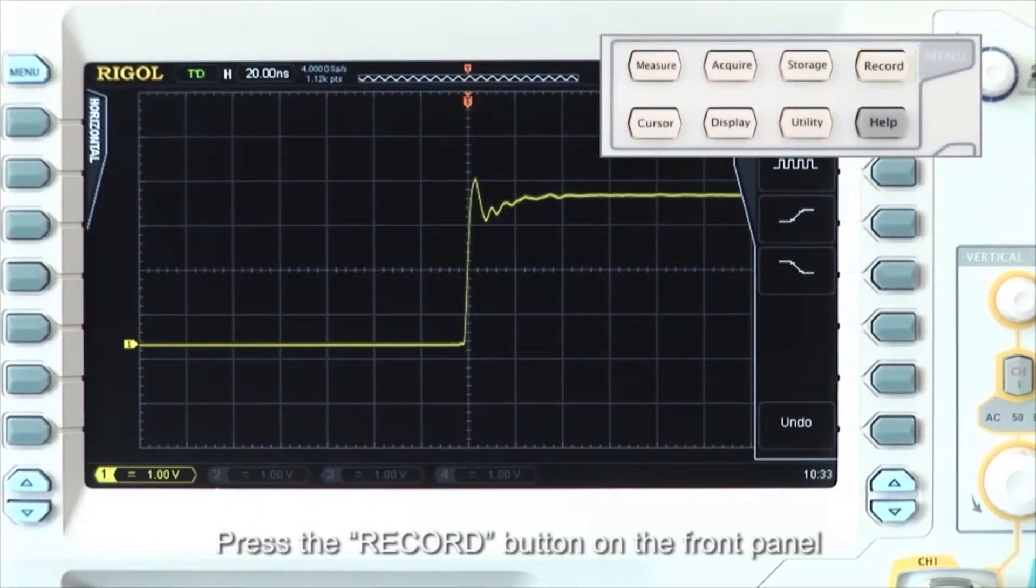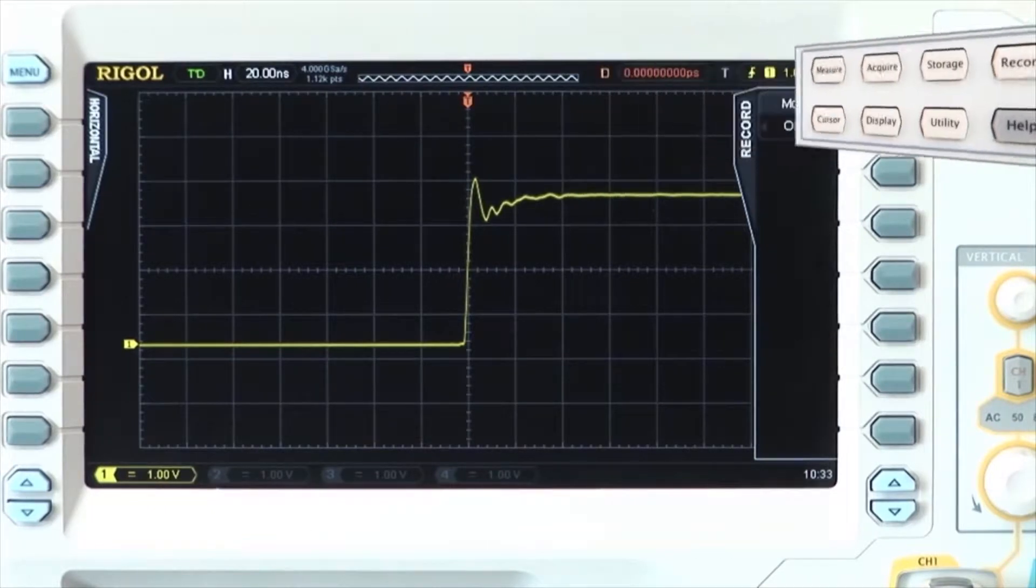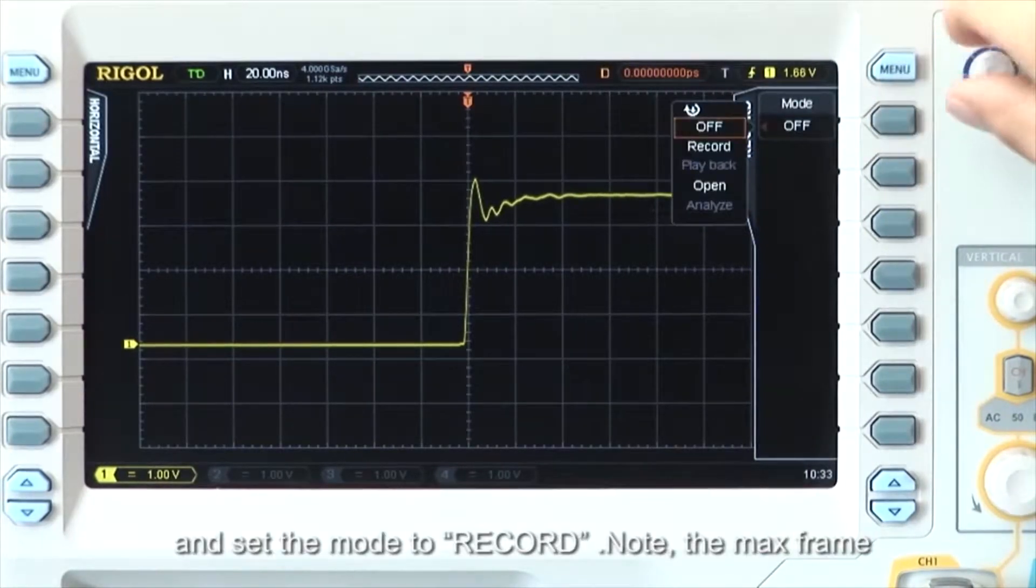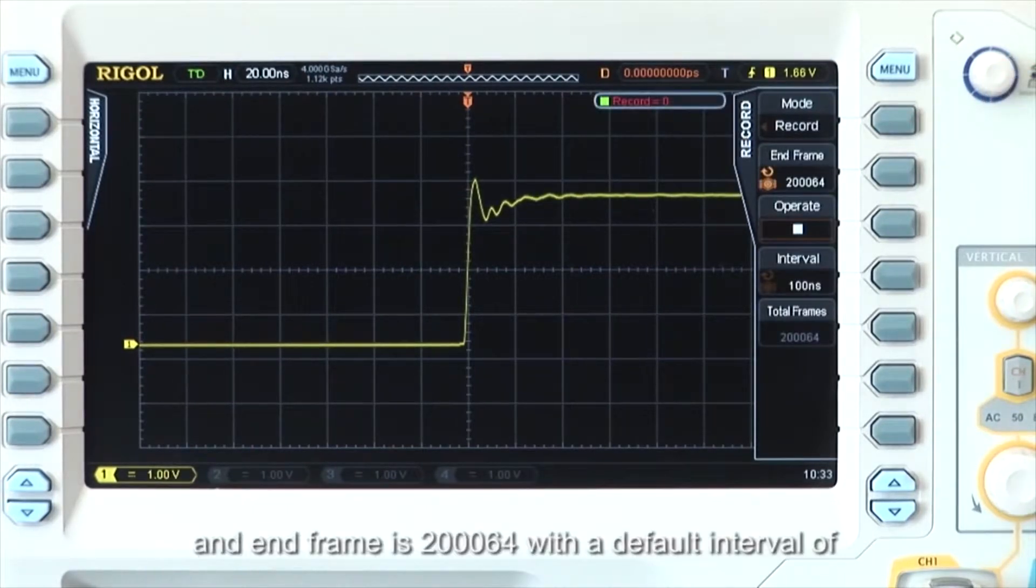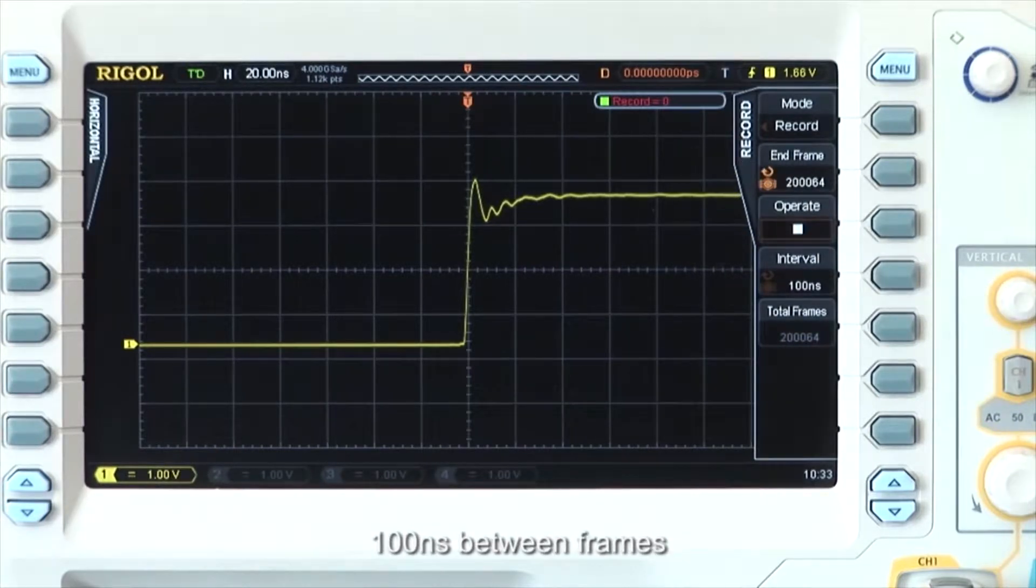Press the record button on the front panel and set the mode to record. Note the max frame and end frame is set to 200,064 with a default interval of 100 ns between frames.